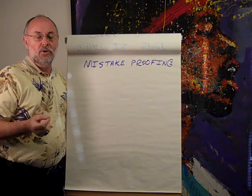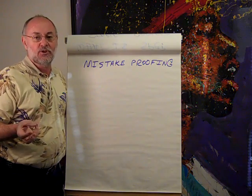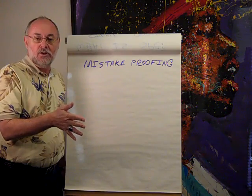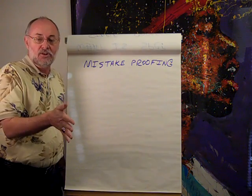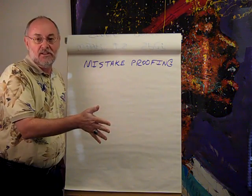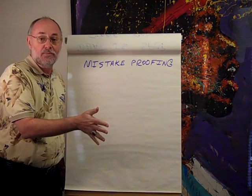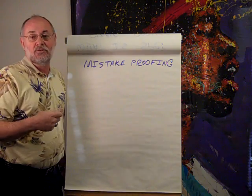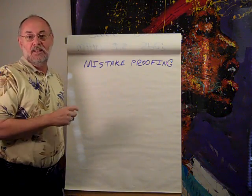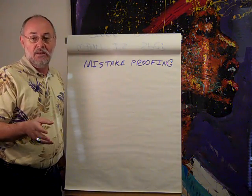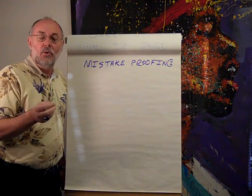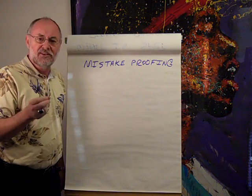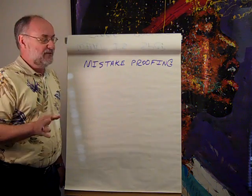Atul Gawande worked with the World Health Organization and they came out with a surgical checklist — six questions pre-op, six questions before incision, and about six questions before the patient is transported. Those things cut mortality rates in half, complication rates in half, and reduced the number of times they had to go back into a patient by 25%. Sometimes it's just simple things that can solve these problems.